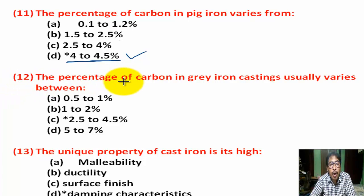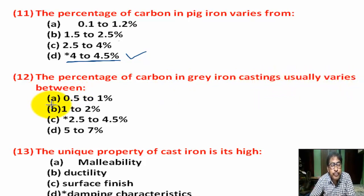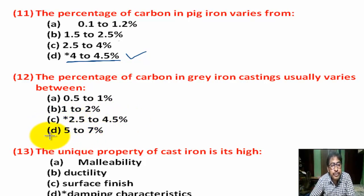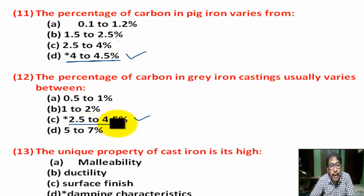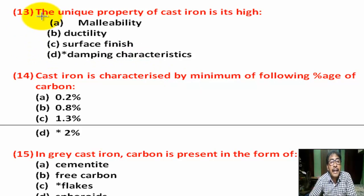Question number 12: The percentage of carbon in gray iron casting usually varies between — Option A: 0.5 to 1%. Option B: 1 to 2%. Option C: 2.5 to 4.5%. Option D: 5 to 7%. Correct answer is Option C — 2.5 to 4.5%.